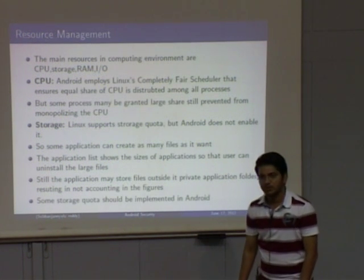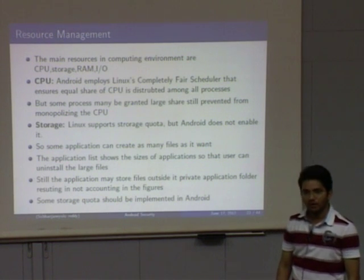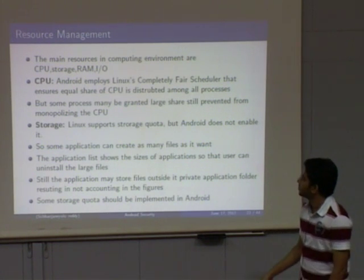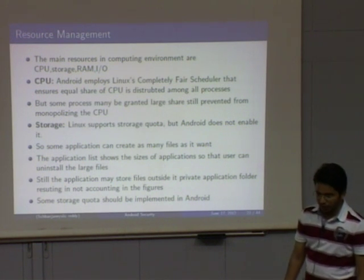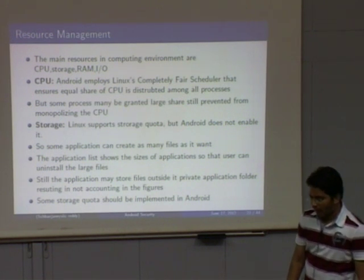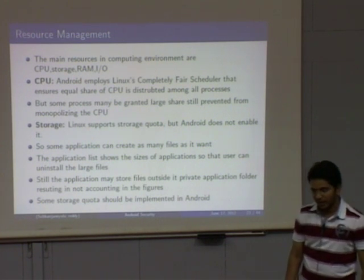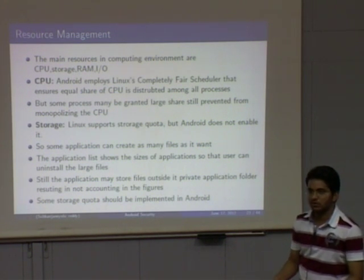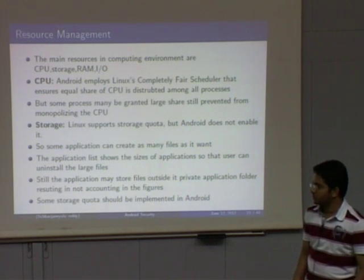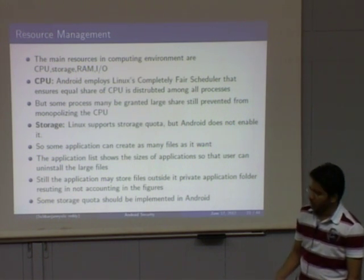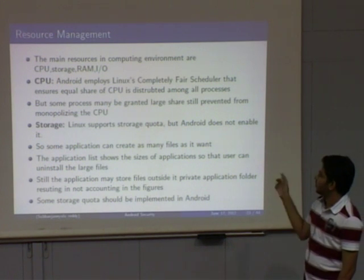Going to resources — the main resources in a computing environment are CPU, storage, RAM, and I/O. For CPU, Android follows the Linux Completely Fair Scheduler, which tries to give equal share to all processes. Some processes may require more CPU, which is supported, but it does not allow monopolizing the CPU.